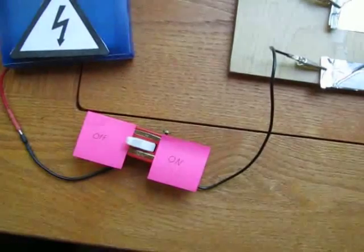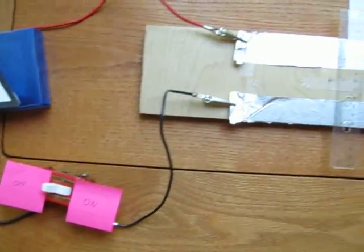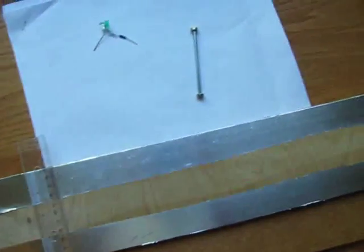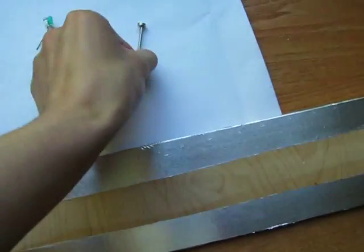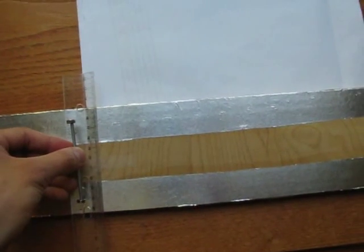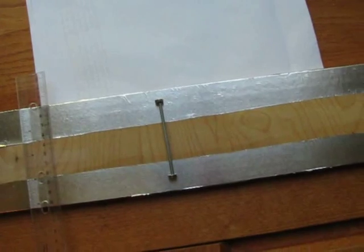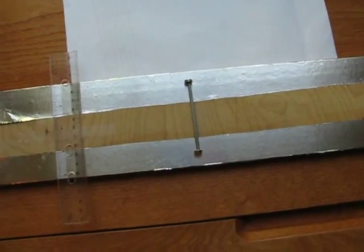We will now test our setup with no electricity flowing through the circuit. We take our projectile, which has two magnets, one on either end, which amplifies the effect. Put it on the ramp and allow it to roll off the edge. You can see that it stops because of friction.